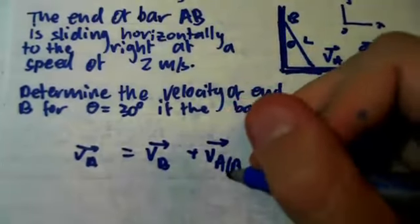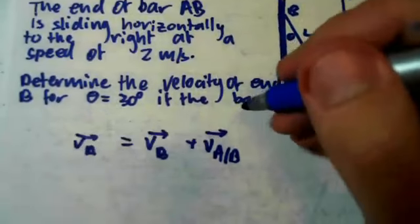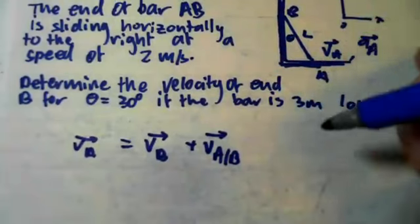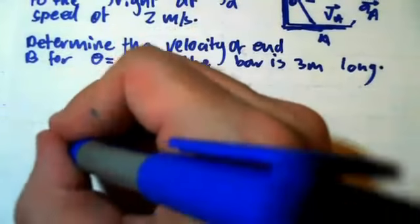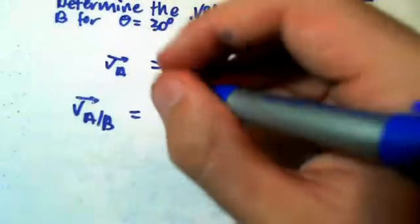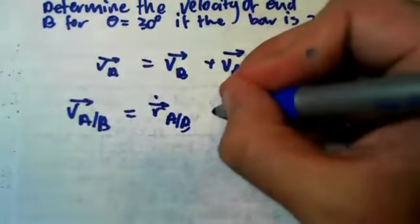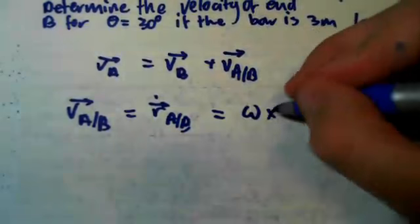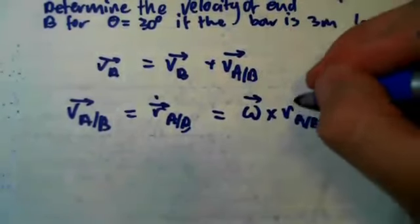Now this V of A with respect to B term is the time rate of change of our relative position. So V of A with respect to B is equal to R dot of A with respect to B, which equals Omega cross R of A with respect to B. These are two vector quantities.